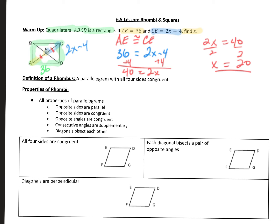Let's look at the definition of a rhombus. A rhombus is a parallelogram with all four sides that are congruent. We convey this using tick marks on the sides. We can also write a congruent statement: segment EF is congruent to segment ED, ED is congruent to DG, and DG is congruent to FG. So we have four sides each congruent to one another.